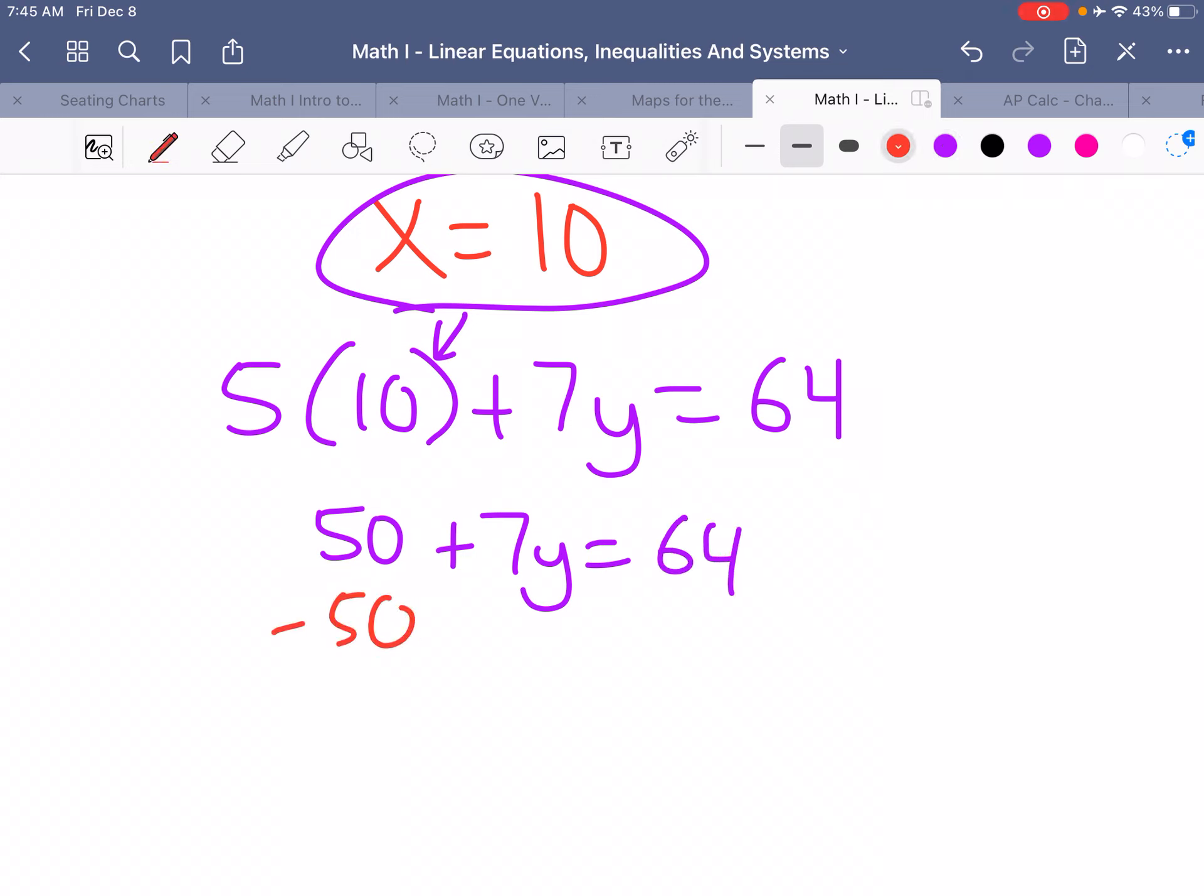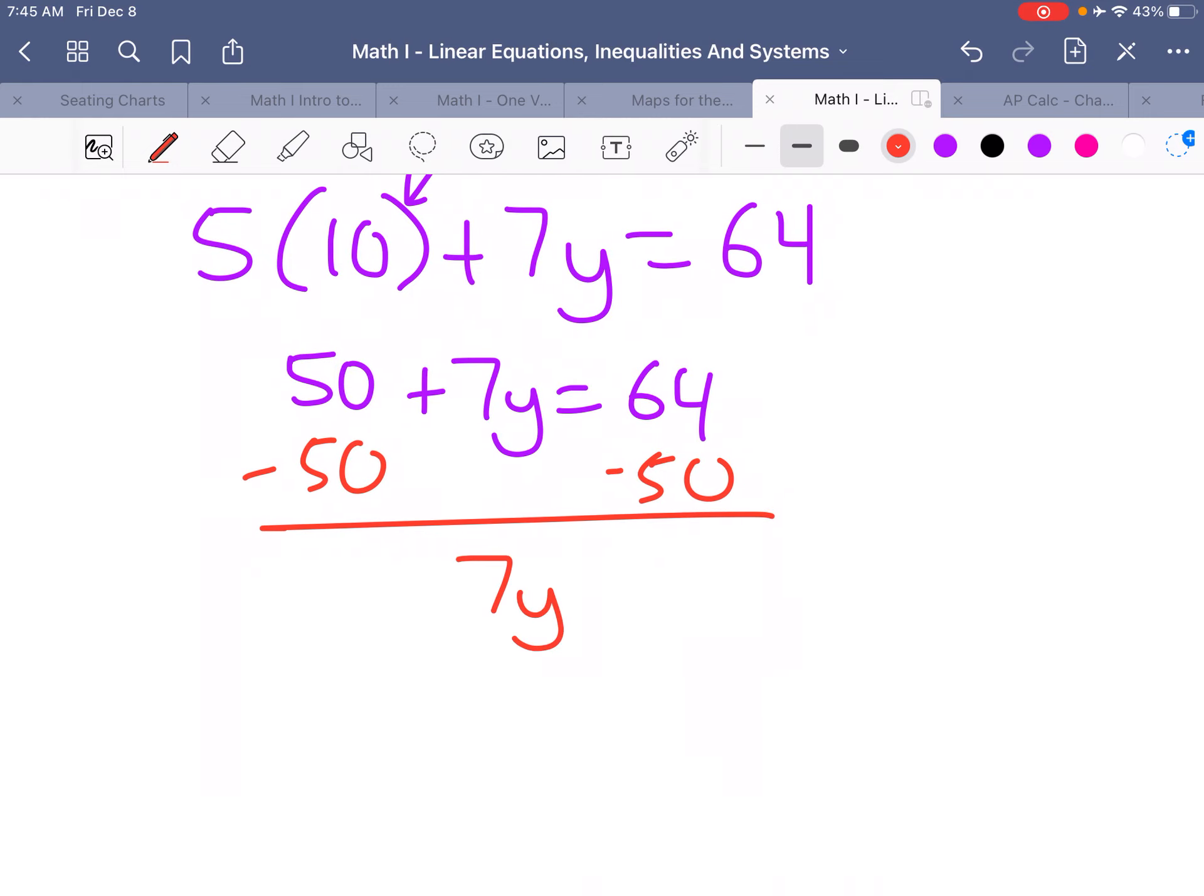plus 7y equals 64. And if I take away 50 from both sides, I get 7y equals 14, so y equals 2.